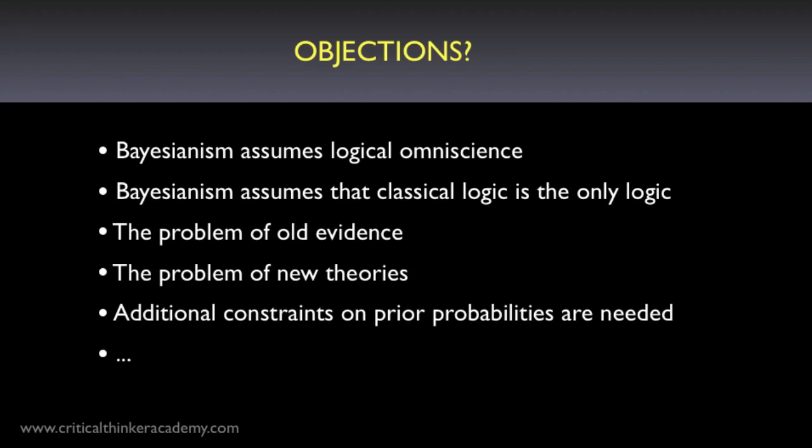I think that's more than enough for this introduction to subjective probability. There are other objections, but those are some of the main ones. To wrap things up: there are a lot of smart people working today in philosophy, statistics, applied math and science, computer science, artificial intelligence, and so on, who are engaged in research within what can be described as a broadly Bayesian framework. That doesn't mean there aren't a lot of open problems with the framework that need to be solved, but it does mean that this is a framework that people are willing to openly endorse without embarrassment.